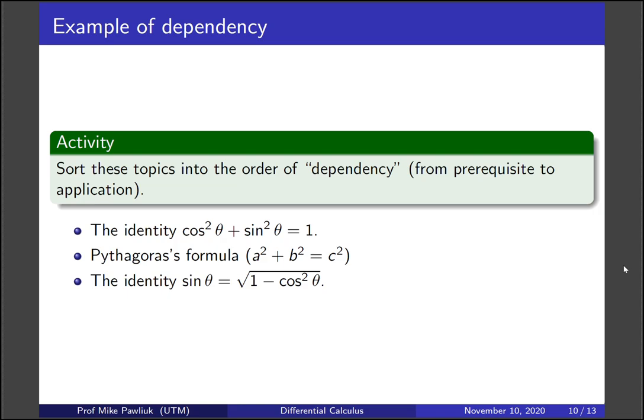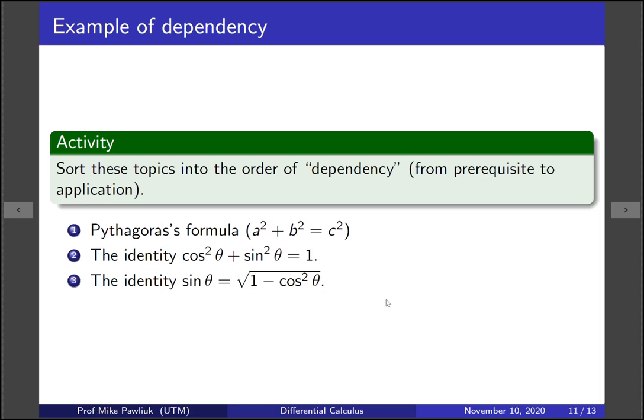So of these three, the one that's most complicated, or the one that requires the most prerequisite knowledge, is this sin squared equals square root thing. And it's because we used the identity cos squared plus sine squared theta equals 1 to get that. And where did we get that? We got that from Pythagoras. So the order of prerequisites to applications, the dependency order, is first we can learn Pythagoras' formula. Once we know that, we can learn this from the unit circle. And once we know that, we can rearrange to get this identity.